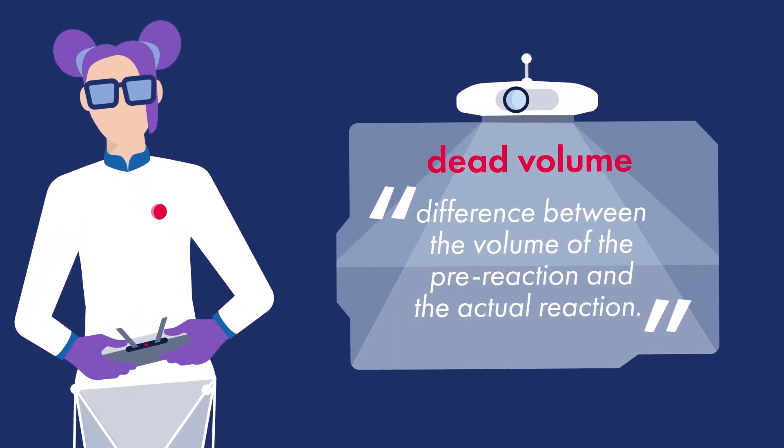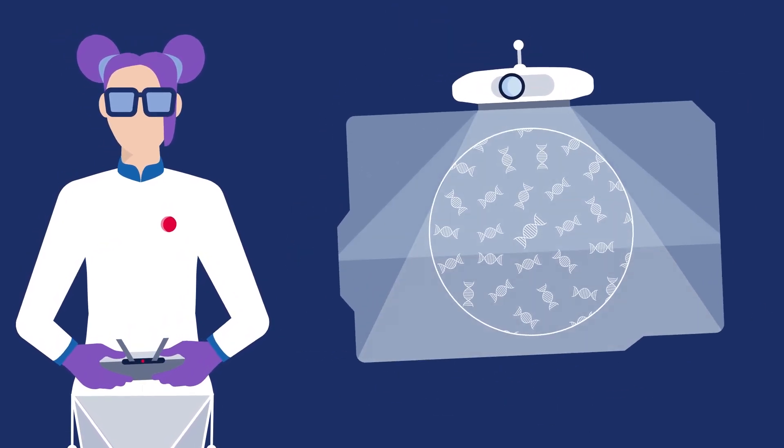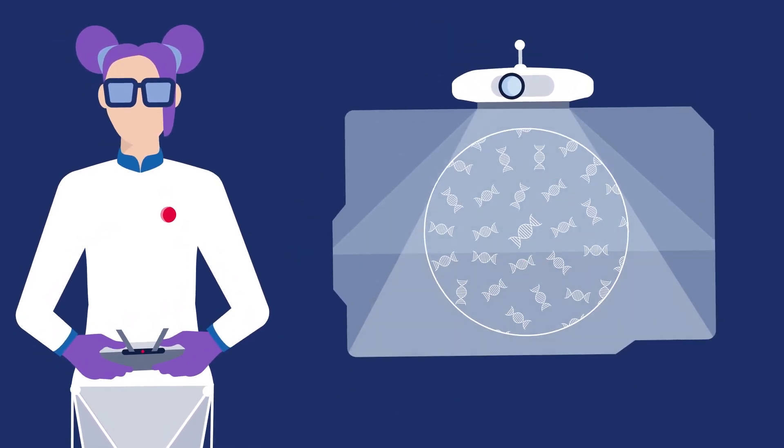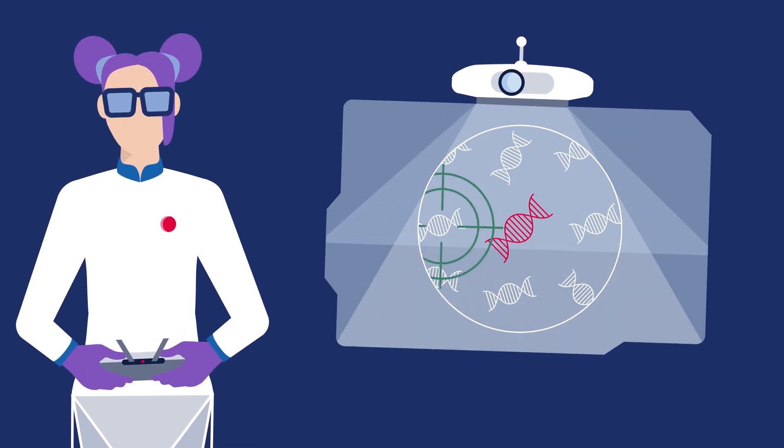Dead volume is important, especially when measuring low concentrations of the target. An example would be a rare mutation, where you can miss the target.